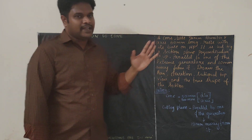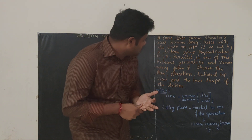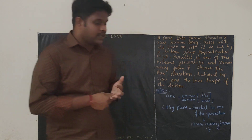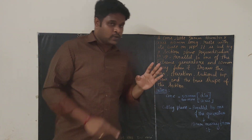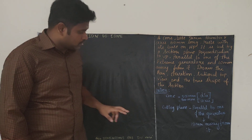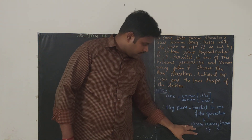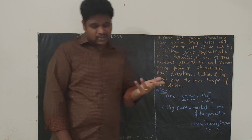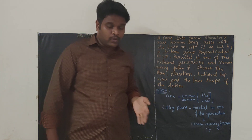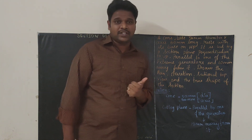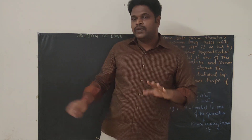So the cutting plane is 10 mm away from the extreme generator, and it's also parallel to the extreme generator. We have to keep two things in mind: the cutting plane is parallel to the extreme generators and 10 mm away from it. They are asking us to draw the sectional top view, true shape of the section, and front view and top view.